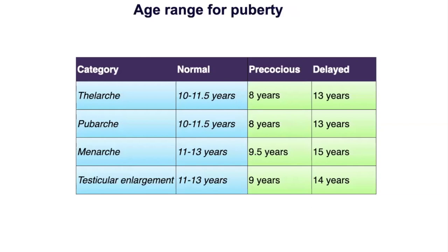Age-specific criteria should be used when evaluating a patient for pubertal disorders. Precocious puberty in girls is defined by onset of thelarche or puberty before 8 years of age, or menarche before 9.5 years. In boys, testicular enlargement before 9 years defines precocious puberty. Delayed puberty in females is absence of thelarche by 13 years or menarche by 15 years, while absence of testicular enlargement beyond 14 years defines delayed puberty in males.